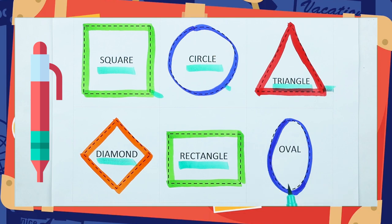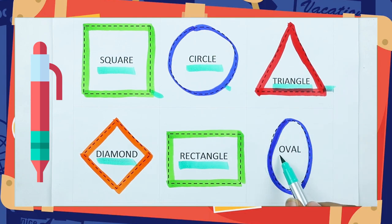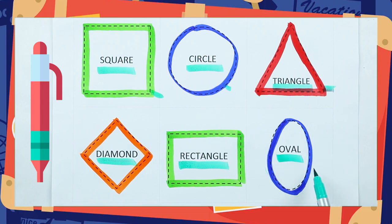Which shape is this? Oval. Right, O-V-A-L. It's an oval, with blue color.